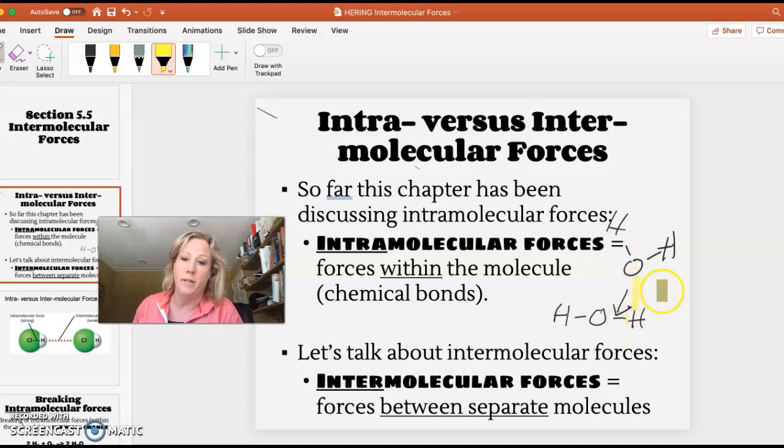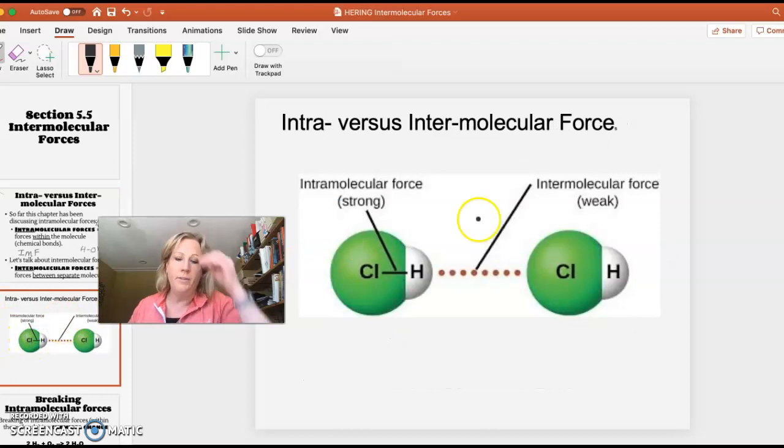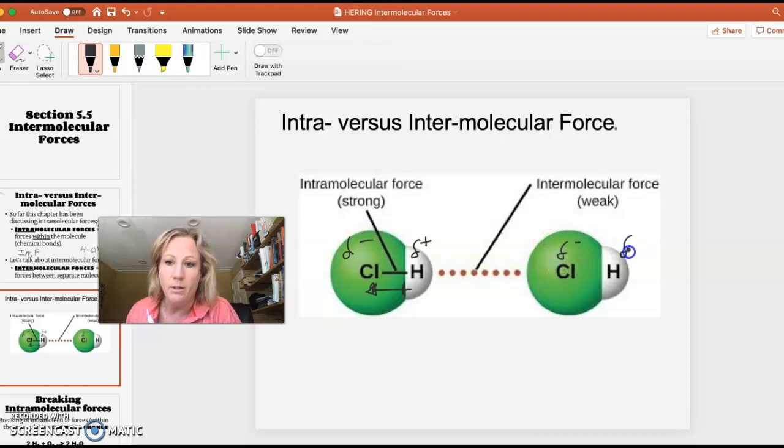So those are called inter or IMFs. Here's another picture of one. Here's hydrogen chloride, HCl. Because there's a dipole, you guys remember our dipole arrows, the hydrogen is slightly positive, the chlorine is slightly negative.